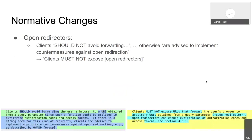For the normative changes: before this version, we had 'clients should avoid forwarding users to arbitrary URLs,' otherwise they were advised to implement countermeasures against open redirection. That was really fuzzy. The newer wording is now 'clients must not expose open redirectors,' where also a definition of an open redirector is given. So this changed from 'should avoid' to 'must not expose open redirectors.'